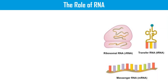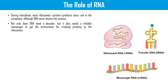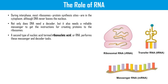Next is the role of RNA. During interphase, most ribosomes, which are the site of protein synthesis, are in the cytoplasm, although DNA never leaves the nucleus. DNA needs both a decoder and a reliable messenger to get instructions for creating proteins to the ribosome. A second type of nucleic acid, RNA, performs these messenger and decoder tasks.